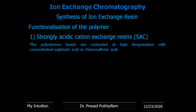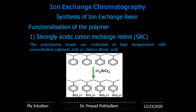For strongly acidic cation exchange resins, the polystyrene beads are contacted at high temperature with concentrated sulfuric acid or chlorosulfonic acid. The cross-linked polystyrene is reacted with sulfuric acid, giving a sulfonic acid functional group (SO3H). This can be used in H form as an ion exchange resin, or replaced with sodium form — both are usable as ion exchange resins.